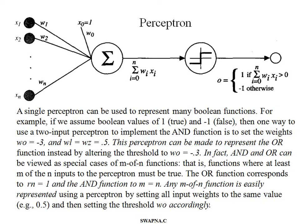The Perceptron takes input nodes as a linear combination of weighted inputs. If the result is more than some threshold value, it gives an output via a step function — outputting 1 if above the threshold, otherwise minus 1.